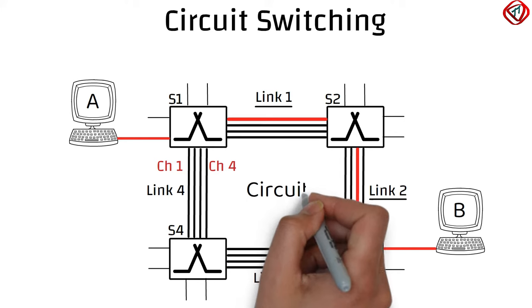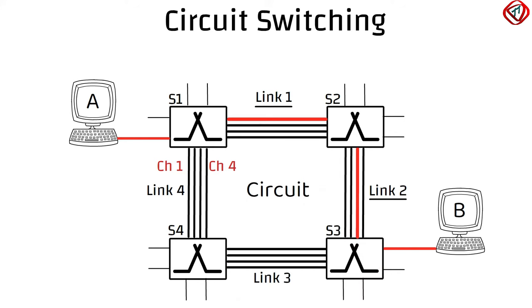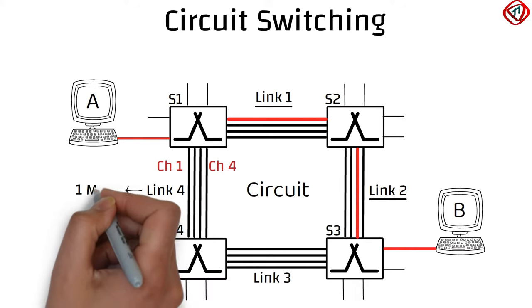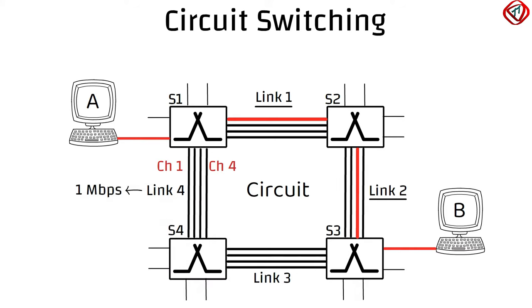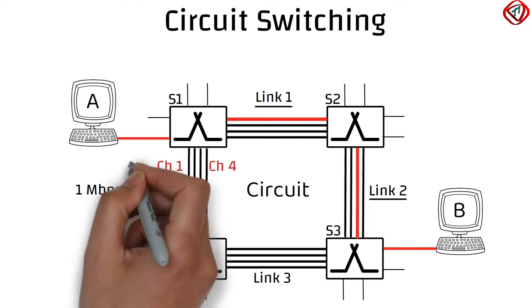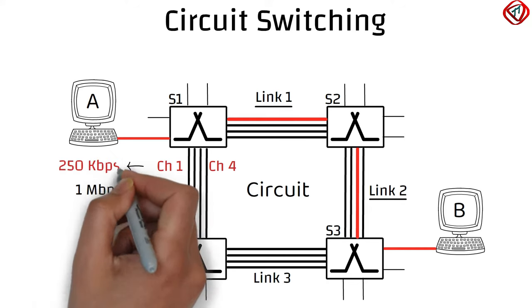So, a circuit is set up between host A and host B. Suppose each link has a transmission rate of 1 Mbps. Since each link has four channels, each channel has a transmission rate of 250 Kbps.